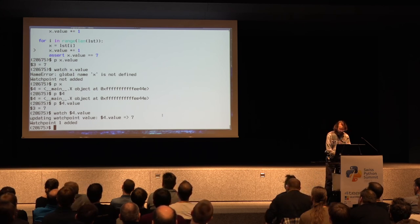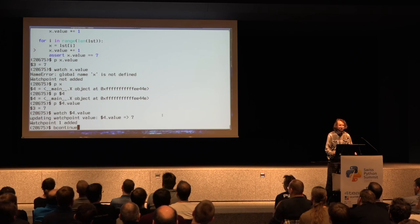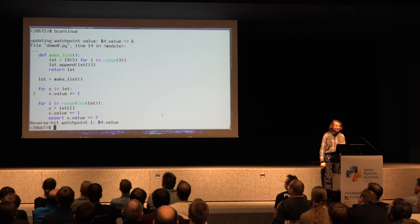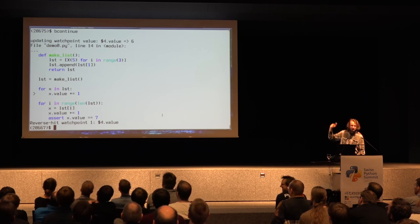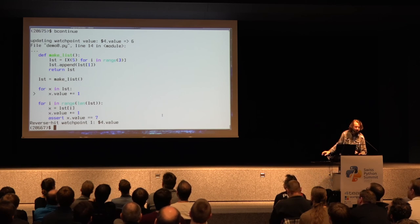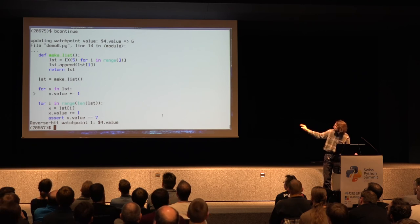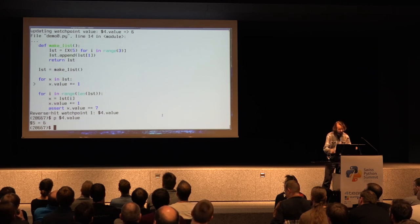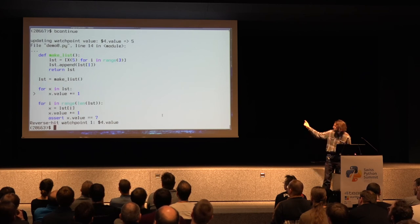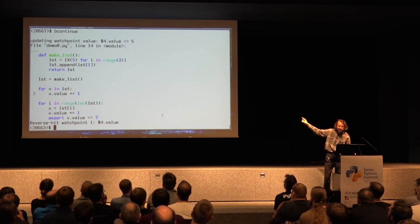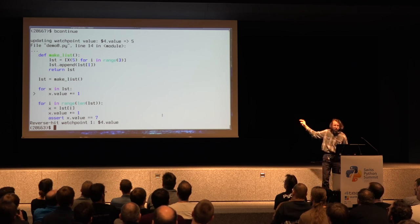I put a watch point on the value of .value of this exact object, $4. Now I can back-continue my program. Now I'm back in the past, at the point where $4.value changed — it says $4.value changed, and it's now 6. But I need to go back again to understand what is going on. Now I'm hitting the same line another time. Something strange is going on.